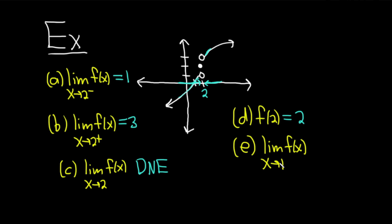Part e wants us to find the limit of f of x as x approaches 1. Here's 1 on the graph — the graph actually goes right through 1. Approaching from the left, you get 0; approaching from the right, you also get 0. So the answer is 0.